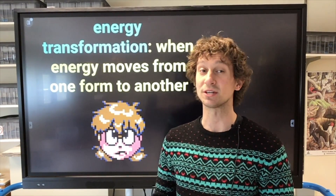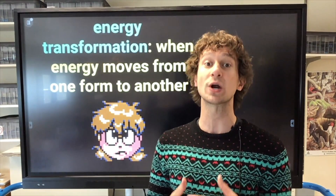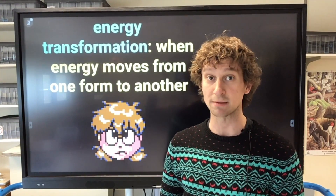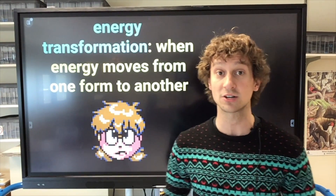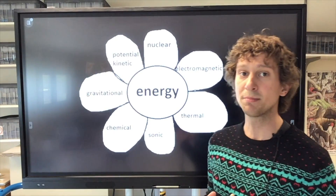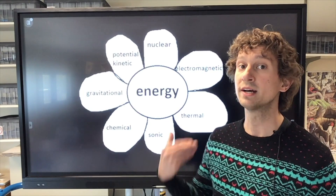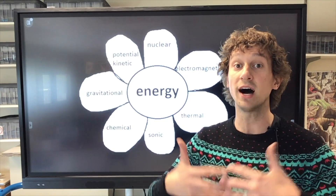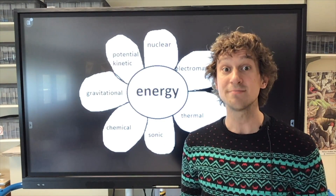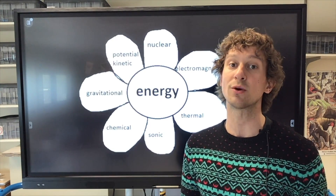Energy transformation is when energy moves from one form to another — the energy itself changes type. In an energy transfer, it moves between objects but stays the same energy type. In energy transformation, the type of energy changes. For example, you can use chemical energy from food to get mechanical energy to move your body, sonic energy to talk, and thermal energy — we are warm-blooded animals with our own internal heat. We only have that because we've eaten and had chemical energy stored in body fat, muscles, and the food we break down every day.